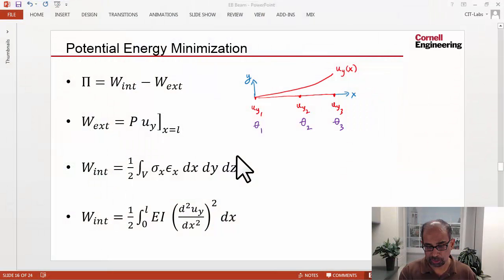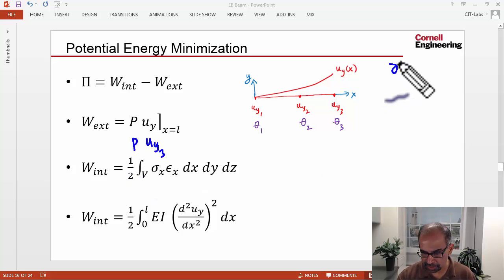If I go back to this slide on potential energy minimization, the work due to external forces is given by this term, and this is nothing but uy3, so it's P·uy3. Then you derive the algebraic equation from minimizing the potential energy with respect to uy3.